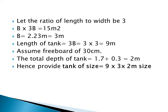For the length-to-width ratio, if not given, you can assume length equals two or three times the width. Here we assume length equals 3 times the width. So L multiplied by W equals 15 square meters, and substituting L equals 3W gives 3W squared equals 15. Solving, W equals approximately 2.23 meters — here taken as W equals 3 meters — giving a length of 9 meters.